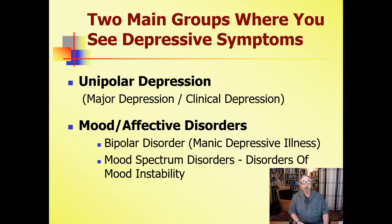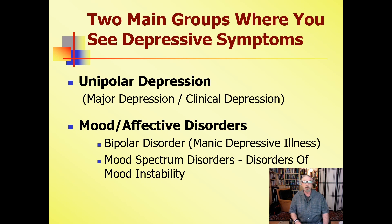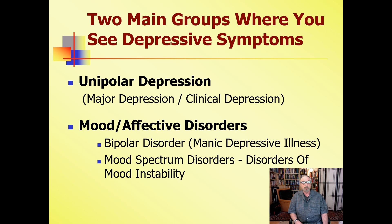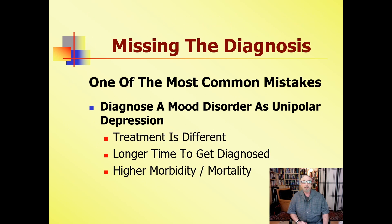There are two main groups where you see depressive symptoms — not the only diagnostic categories, but the most common. When someone comes in and complains of depression, you're going to be looking for unipolar depression, or what we call major depression or clinical depression. Or they may have a mood or affective disorder — for the sake of this discussion, I'll describe these as mood disorders — which consists of bipolar disorder, manic depressive illness, and mood spectrum disorders: disorders of mood instability.